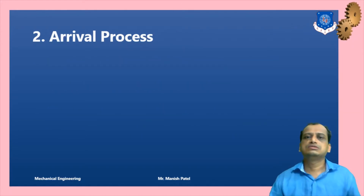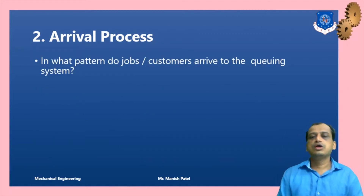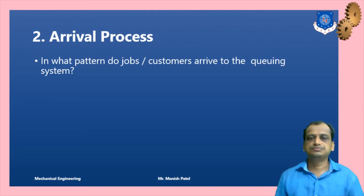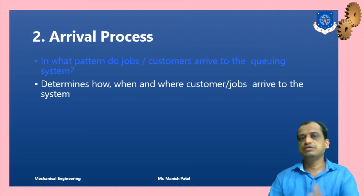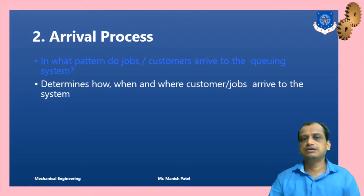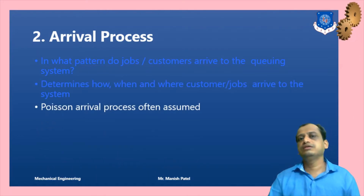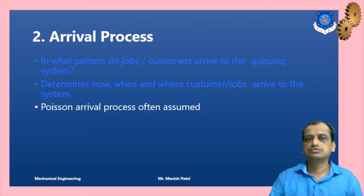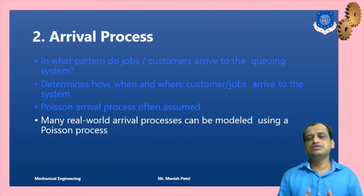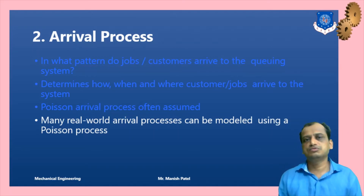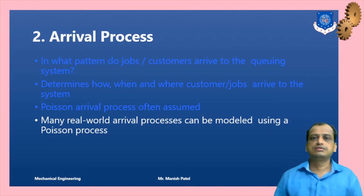For arrival processes, the key questions are: what pattern are they arriving in, and how and when are they arriving into the system — the time and patterns. We assume the Poisson process for arrivals because many real-world arrival processes are well modeled by Poisson processes. That is why we use the Poisson process in this queuing system model.